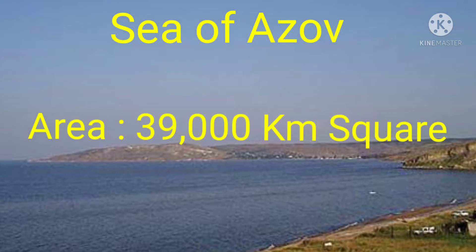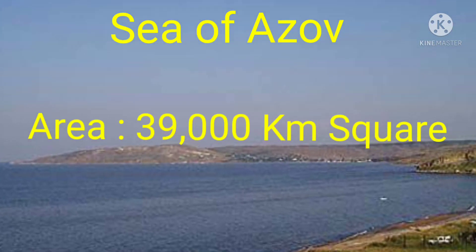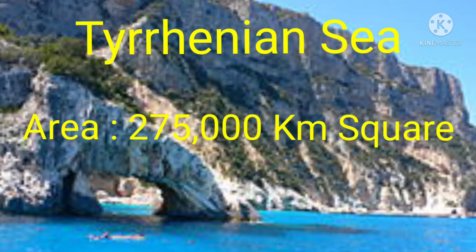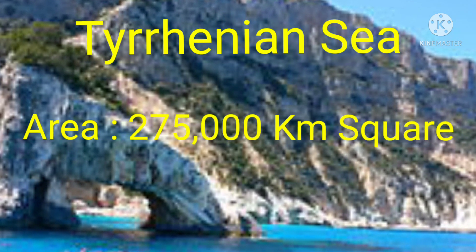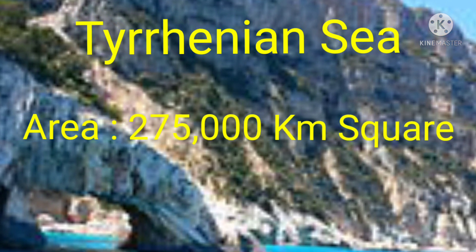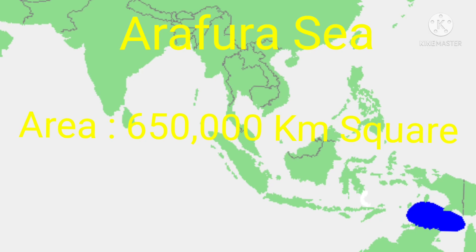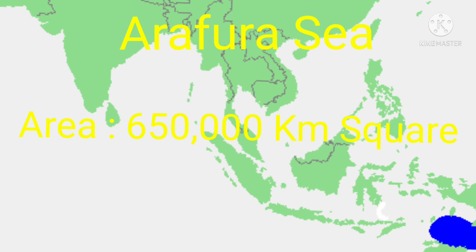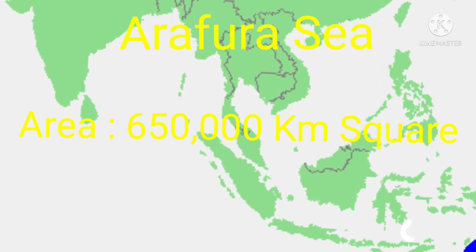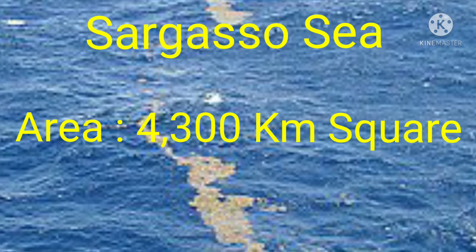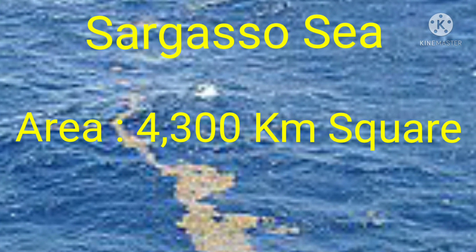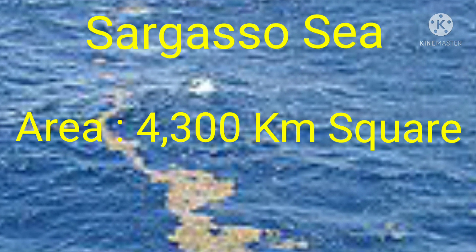Sea of Azov — the area of the Sea of Azov is 39,000 km². Tyrrhenian Sea — the area of the Tyrrhenian Sea is 275,000 km². Arafura Sea — the area of the Arafura Sea is 650,000 km². Sargasso Sea — the area of the Sargasso Sea is 4,300 km².